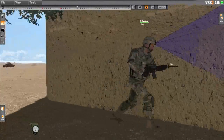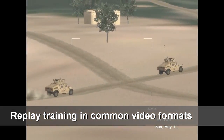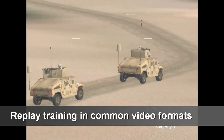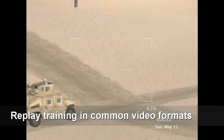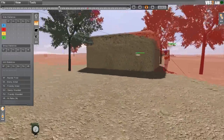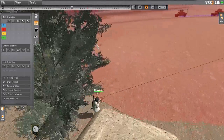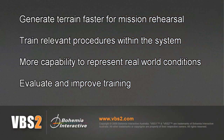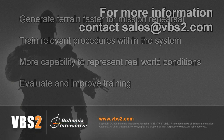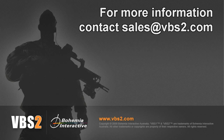Additionally, the instructor uses the security cameras placed in the level to capture different views of the action and store them for the student's future use. As you have seen, the new features of VBS2 1.3 take training and simulation to yet a higher level of fidelity and quality. With the new tool sets, you can generate terrain faster for mission rehearsal, train in relevant procedures within the system, have more capability to represent real-world conditions, and then evaluate and improve training. For more information about the 1.3 features, please contact sales at vbs2.com.